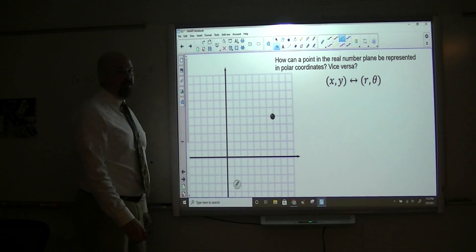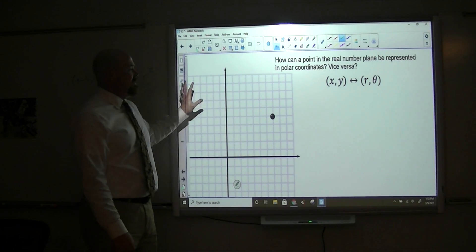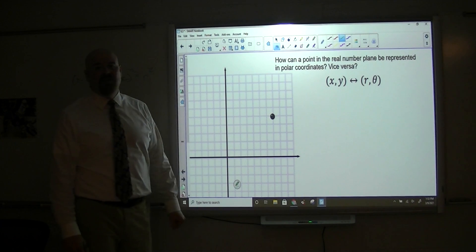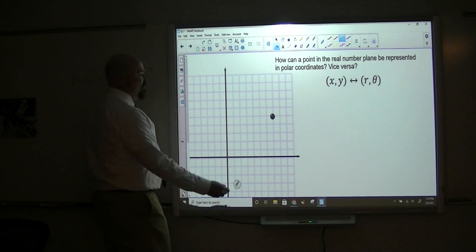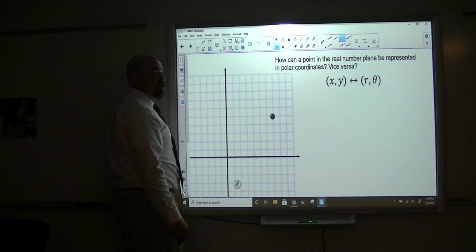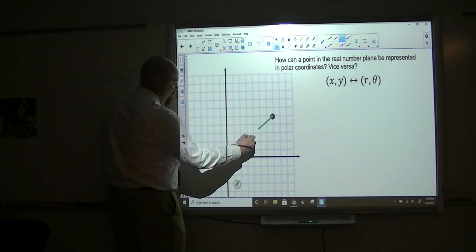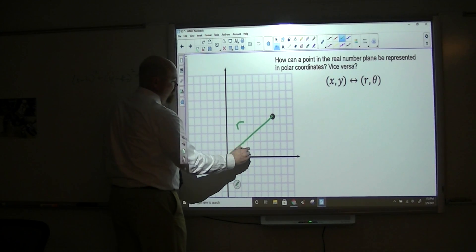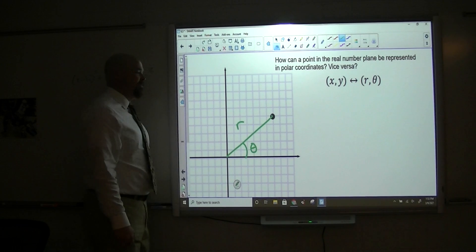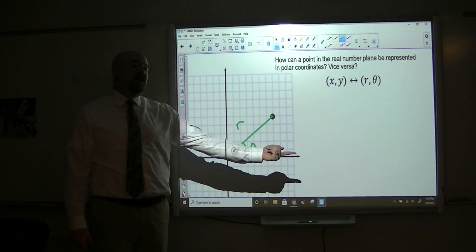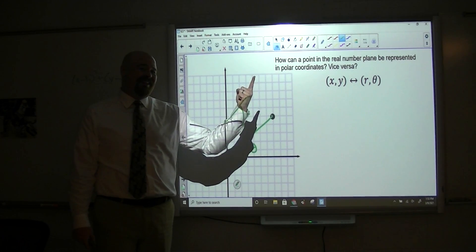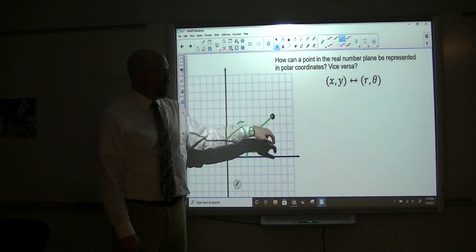So here's this point, right? Now imagine if you will, we don't have the overlay of the Cartesian grid here. If you knew the r and theta of this, what you would know is this distance and you'd know this angle. You'd know how far you had to rotate the polar axis to get to there and you'd know how far out it was.